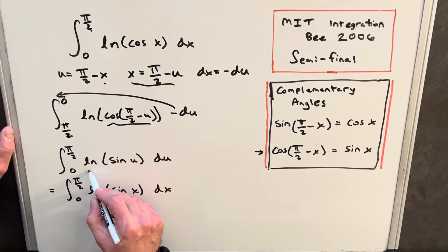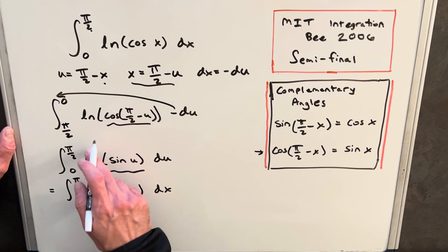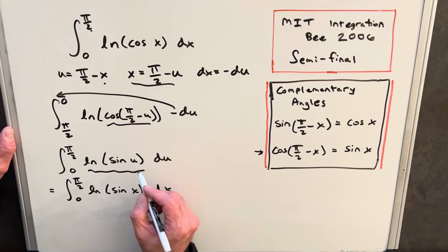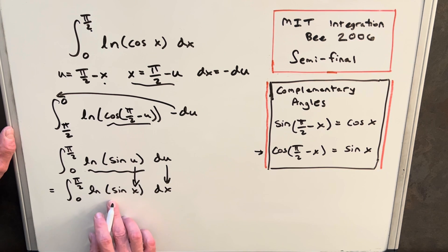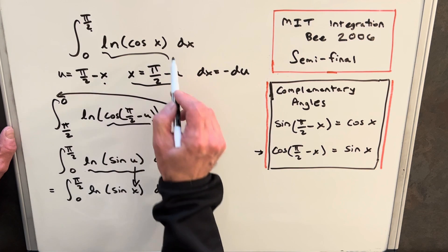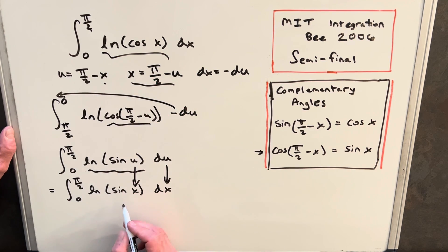So now we're writing this, we just have here ln sine u du. But then at this point, because it's a definite integral, we can change the variable, so I just changed the variable from u to x. And we notice that we're back to something very similar to our original integral, just instead of cosine we have sine inside the natural log.